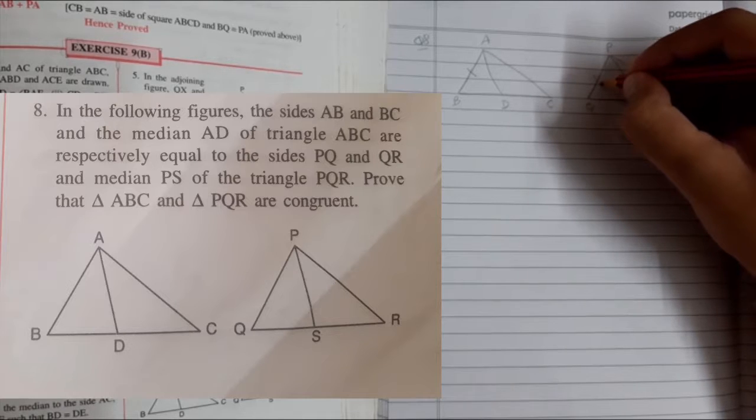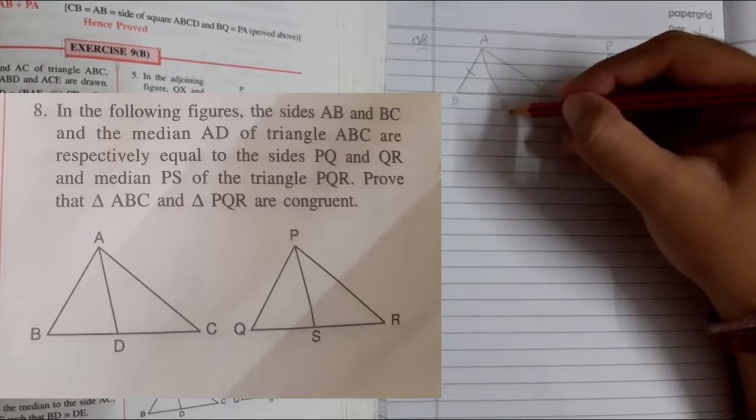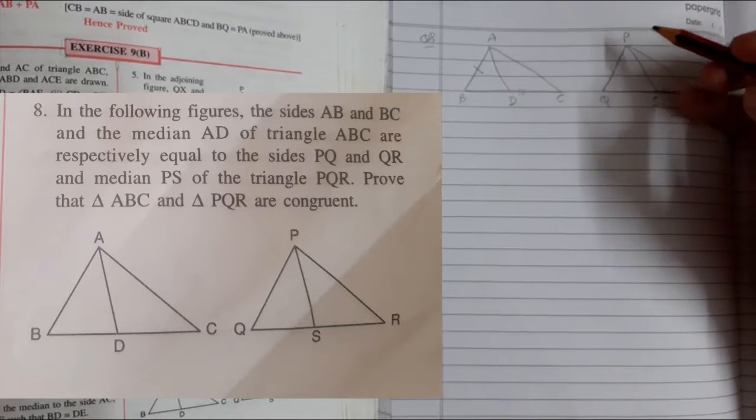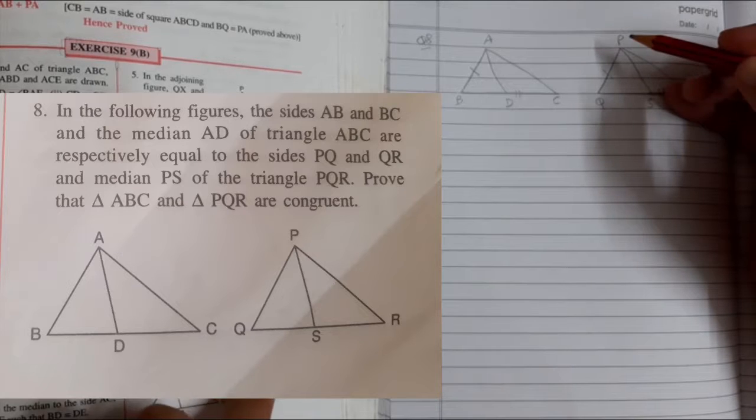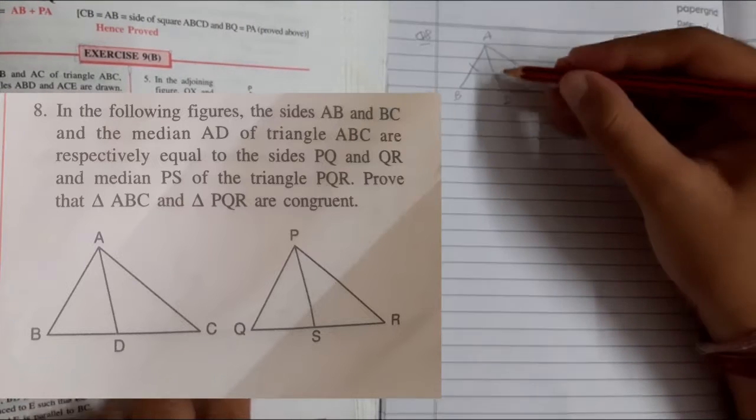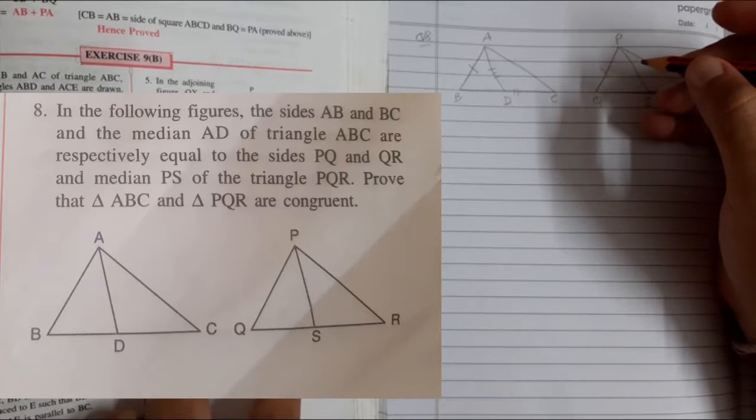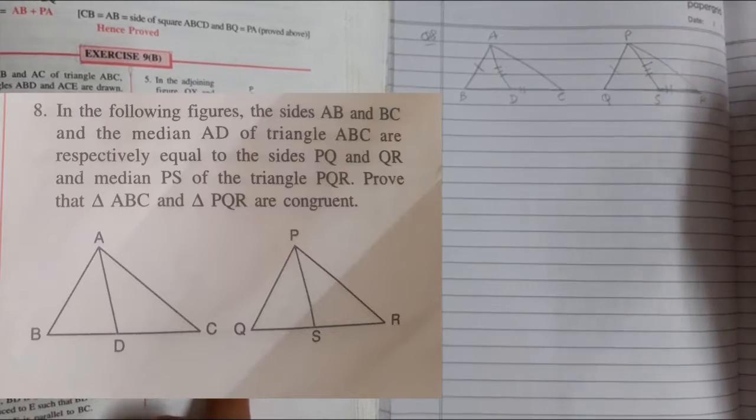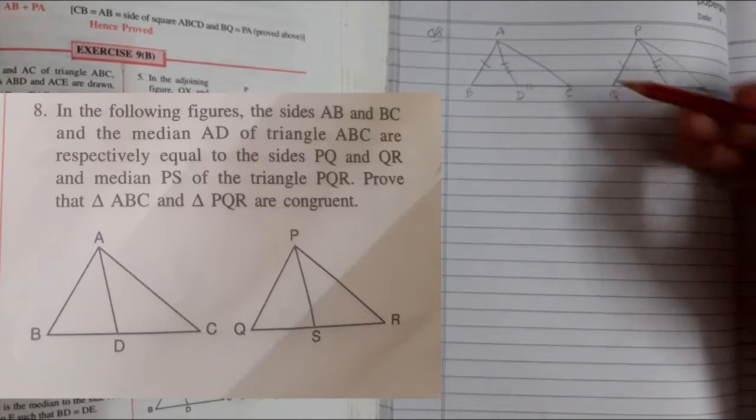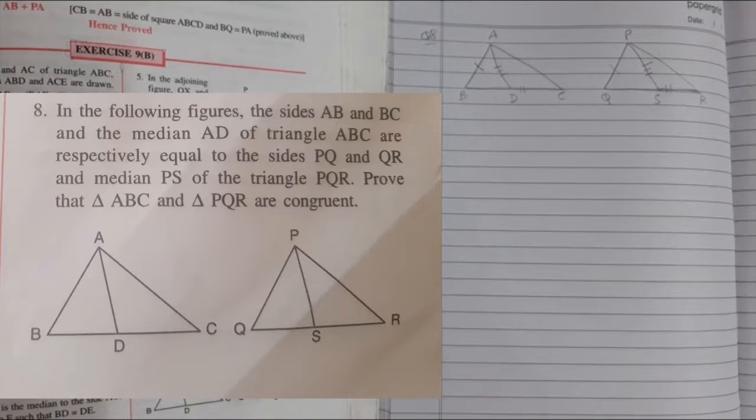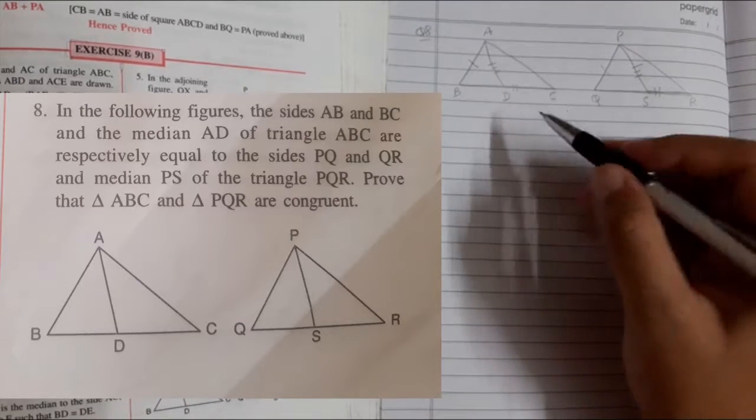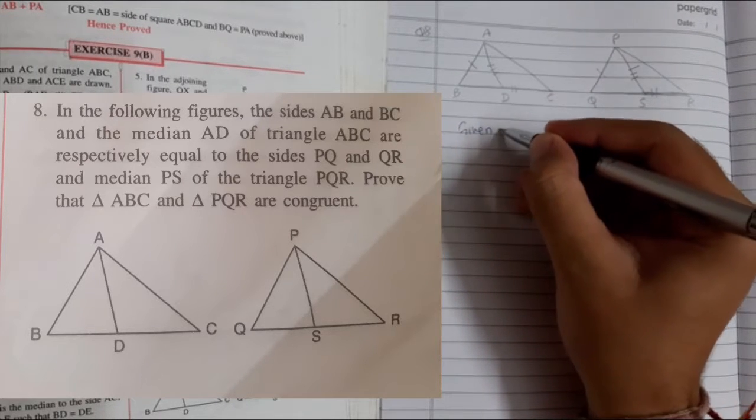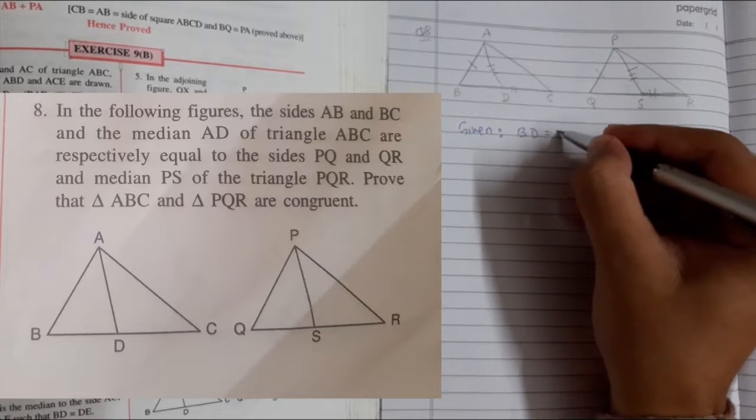PQ, BC equals QR, and median AD equals median PS. Since AD and PS are medians, they divide the base into two equal parts. Therefore, we can write BD equals DC.